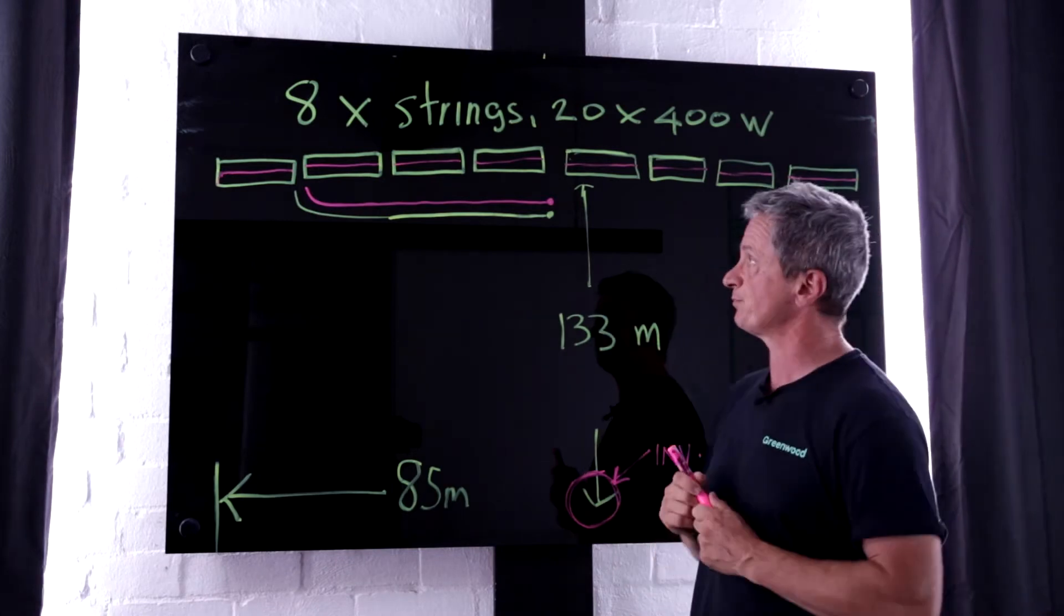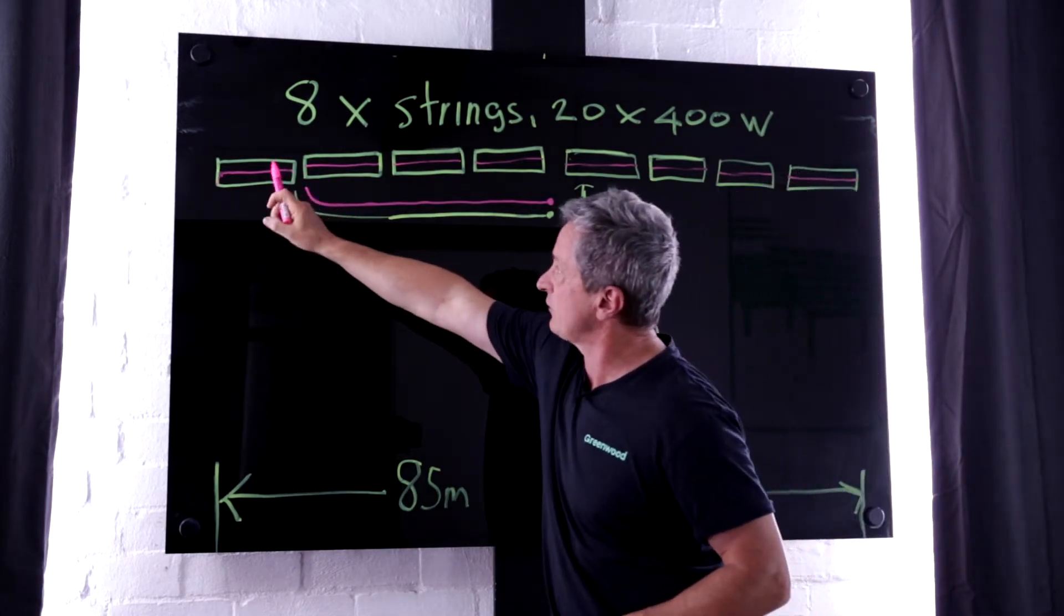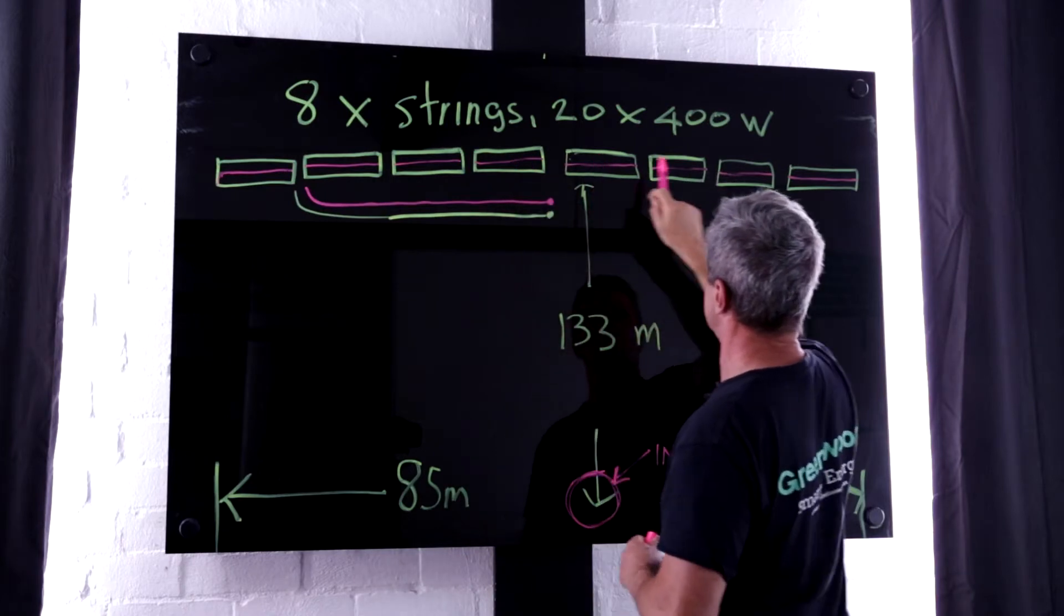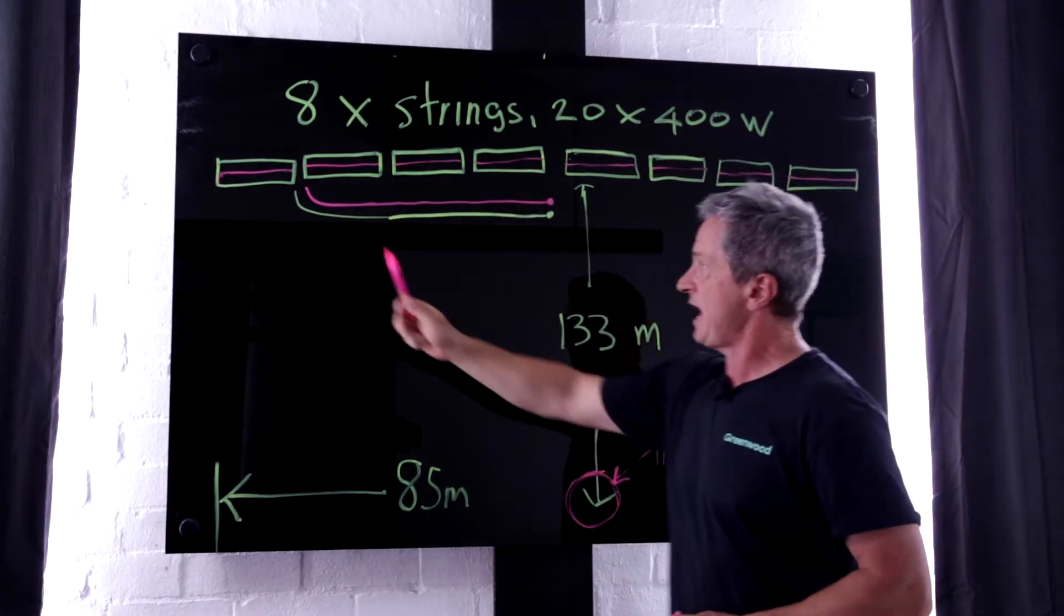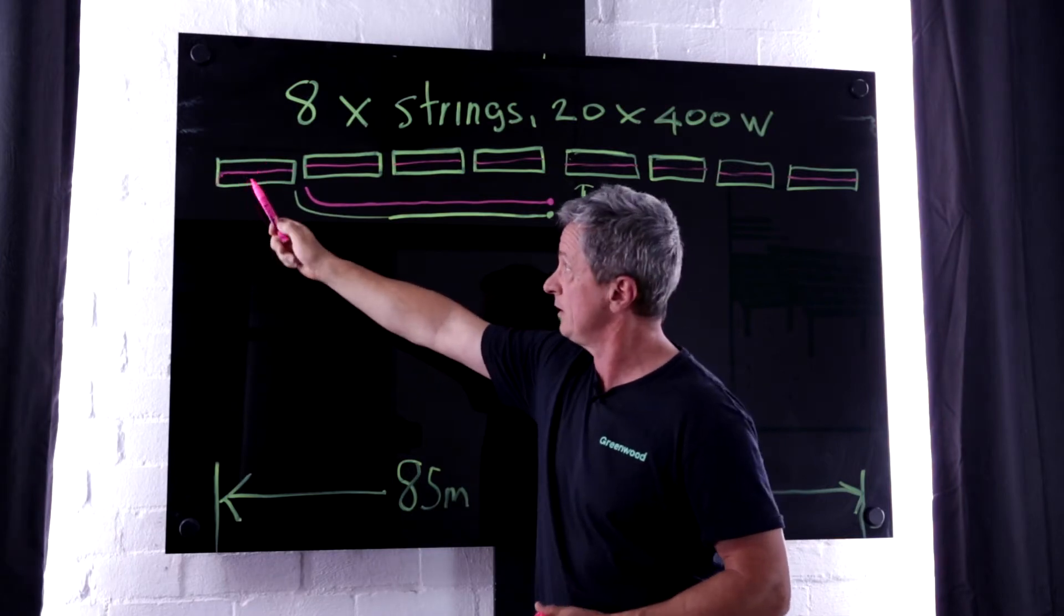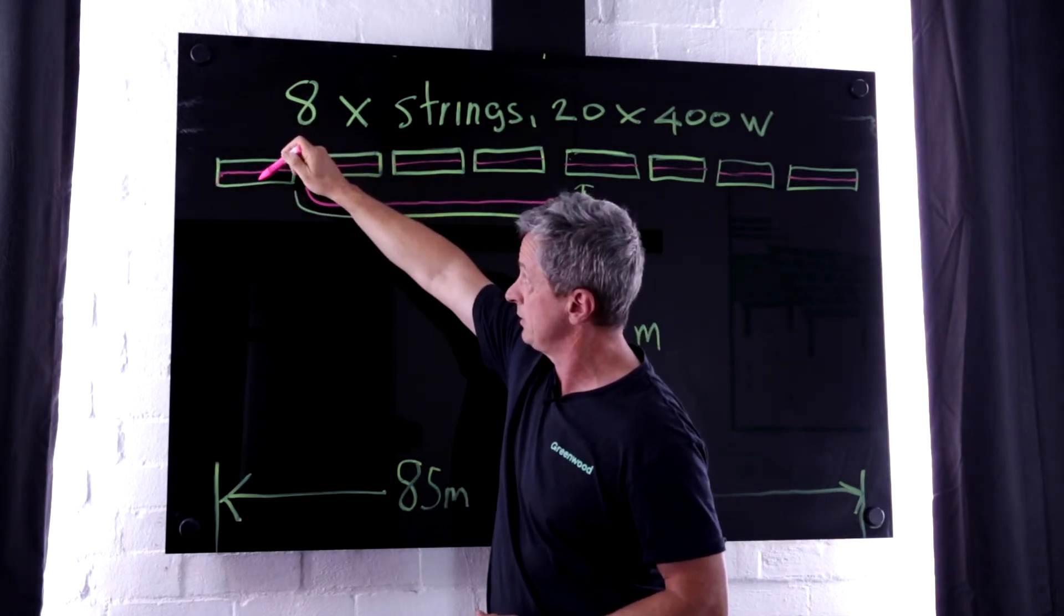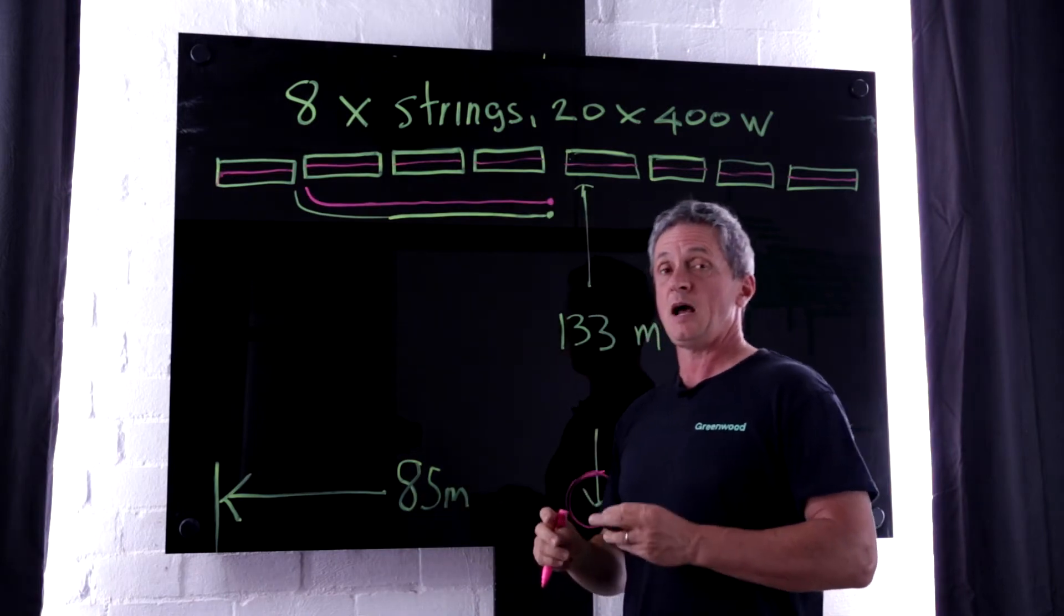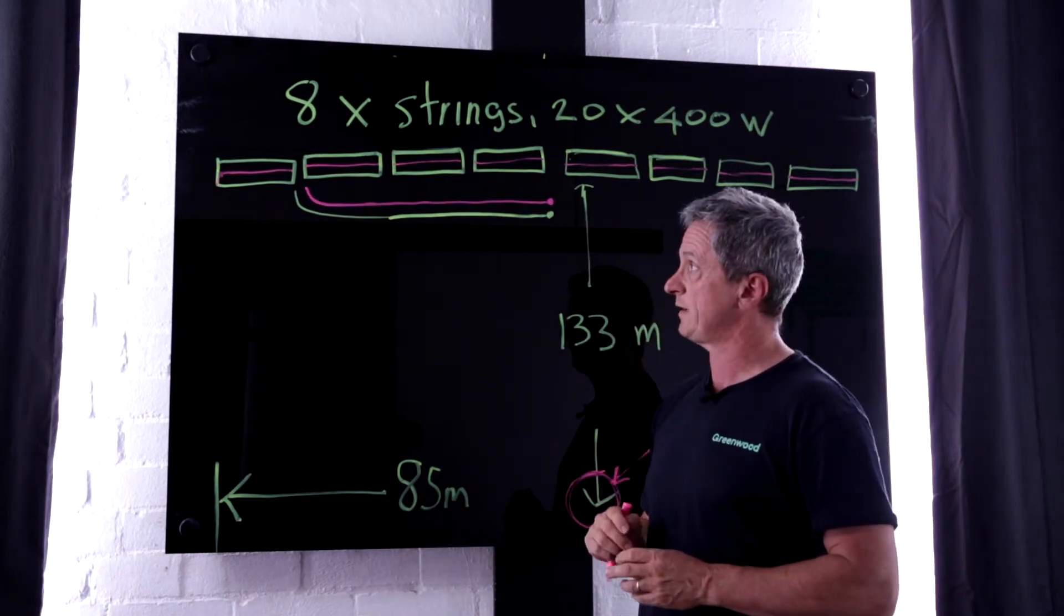Yeah, so we've come to the board. So we have eight strings, so each of these is a string. And each string consists of 20 panels, 10 panels on top, 10 panels on the bottom, in a portrait configuration.